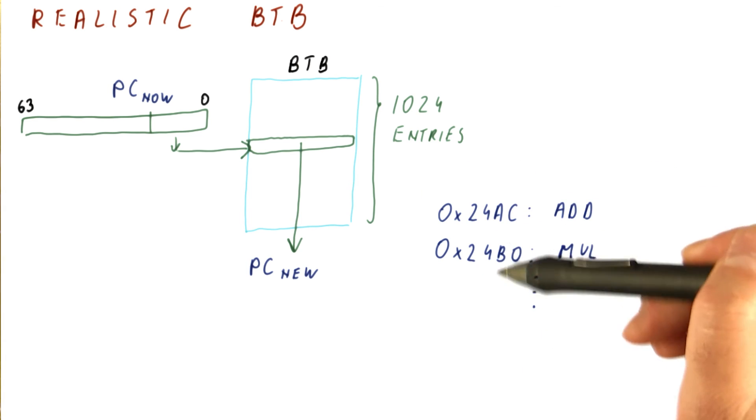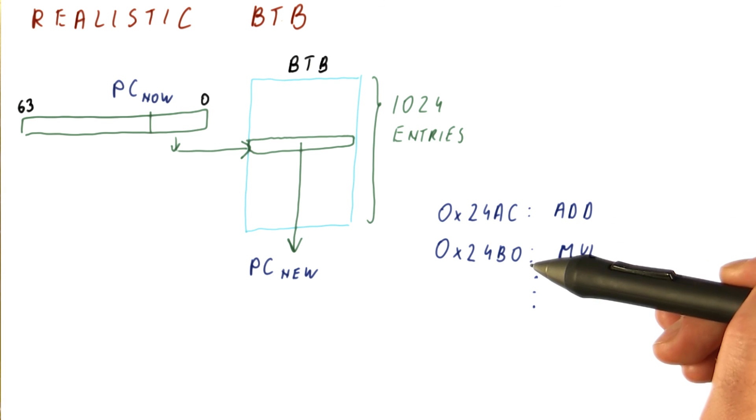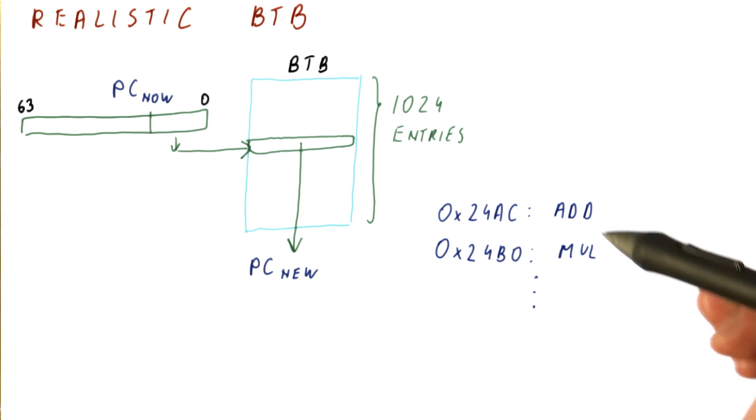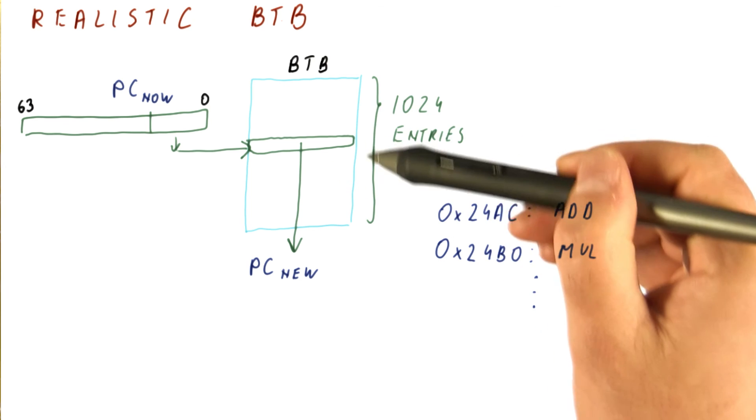If we use the least significant bits, what we get is that each instruction gets a different entry from nearby instructions, thus ensuring that things like loops and functions and so on neatly map to the B2B.